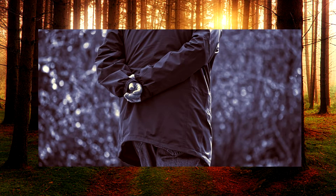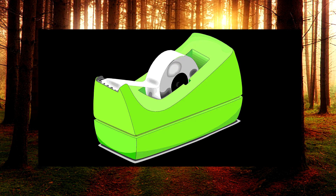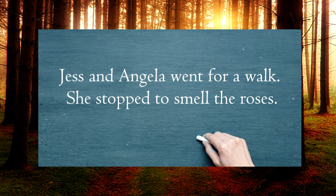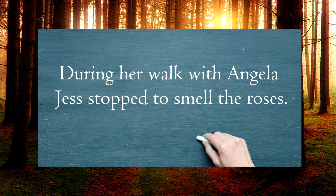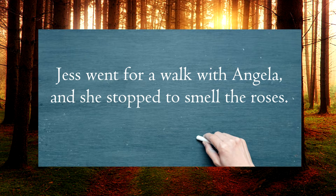Let's go back to our examples and see if we can fix them. To fix, simply make sure that you clearly identify what the subject of your sentence is and be more specific when describing it alongside pronouns. Our original was: Jess and Angela went for a walk. She stopped to smell the roses. The fixed version could be: During her walk with Angela, Jess stopped to smell the roses. Or, if we include the pronoun: Jess went for a walk with Angela and she stopped to smell the roses.